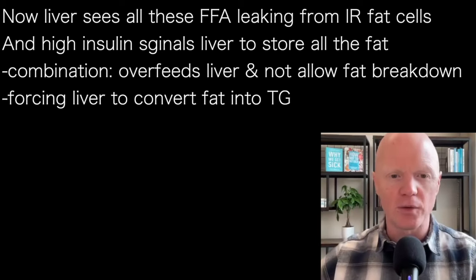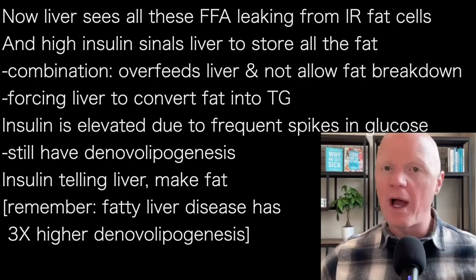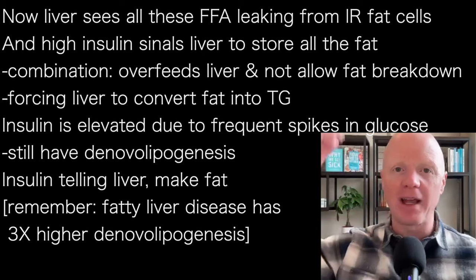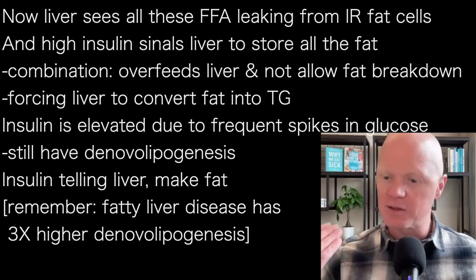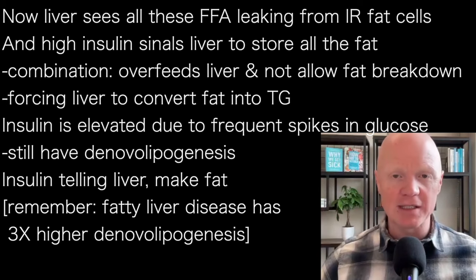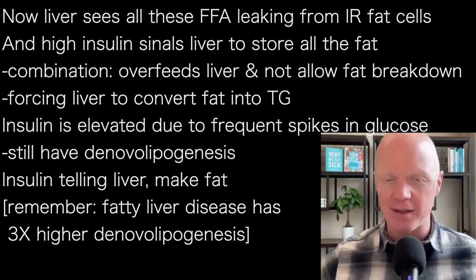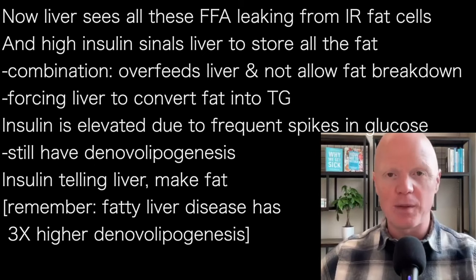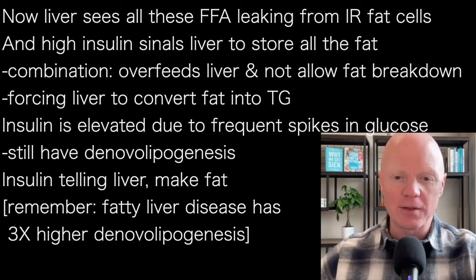At the same time that insulin is elevated — why would insulin be elevated? A key part of this is going to be the chronic and frequent spikes of glucose. So in a case of elevated insulin with insulin resistance, very likely there is an abundance of glucose as well. We also still have de novo lipogenesis being relevant here, because the chronically elevated insulin is telling the liver: you have a lot of glucose too. So while I'm forcing you to store all of that fat coming from the insulin resistant fat cells, I also want you to continue to make fat. So de novo lipogenesis goes up a lot — in people with fatty liver disease, it's at least three times higher than in people without fatty liver disease.